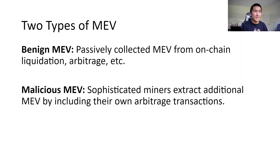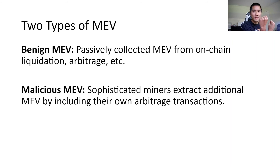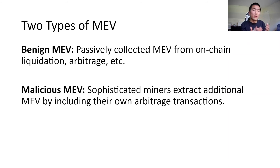There's a second type of MEV that's currently not as popular but might grow post-EIP-1559: malicious MEV. This is where sophisticated miners extract additional MEV by including their own arbitrage transactions. Going back to the $1,000 arbitrage example — Bob bids $50 in gas, but miners can notice Bob's transaction and bid $100 for it, forcing Bob to bid over $100 to capture the arbitrage. Sophisticated miners can do this by front-running opportunities in the Ethereum mempool and artificially creating MEV, which is bad for market participants and bids gas up for everyone.